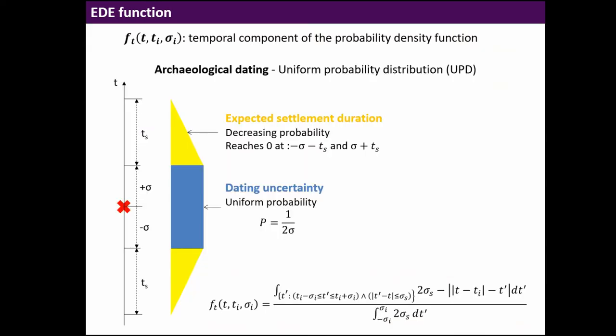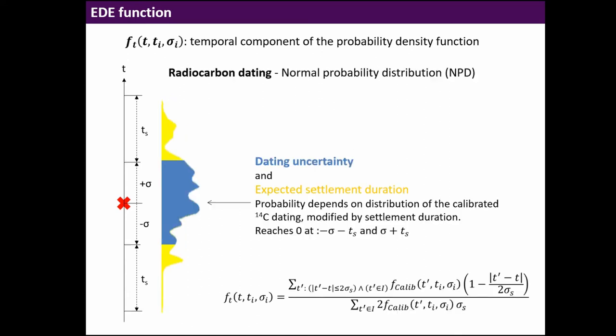The temporal component: we have two types of evidence. We can have archaeologically dated settlements where we're dealing with uniform probabilities. This is for the registration of the find, the interval of the dating. Then we have decreasing probabilities to account for the duration of the settlement. The settlement could have begun here and ended here, but also anywhere in that interval.